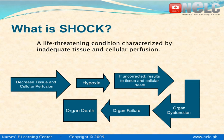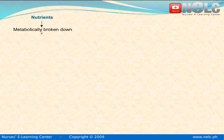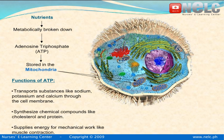If not corrected, it would eventually lead to cellular death, and with cellular death, there would be organ dysfunction, organ failure, and later on, organ death. For better understanding about how abnormal cellular metabolism takes place during shock, let us first refresh our knowledge about how the cells work.